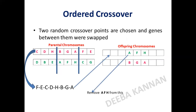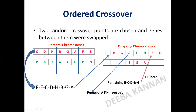This list is used to fill offspring one's chromosome, but we first exclude A, F, H, G — those already existing in the offspring chromosome. After removing those, the remaining genes are E, C, D, B, G. These are filled into the remaining positions in offspring one, placing E, C, D, B, G in order.